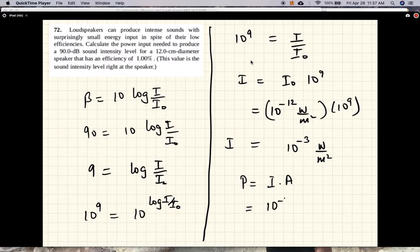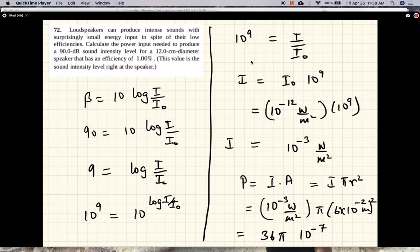So the energy the speaker is putting out per second in sound waves. So this is 10⁻³ watts per meter squared. And the area of the speaker is, of course, π r squared. So π. And the radius of the speaker is 12 centimeter diameter, so 6 centimeters. So this is 10⁻⁴, 10⁻⁷. So 36π times 10⁻⁷ watts.